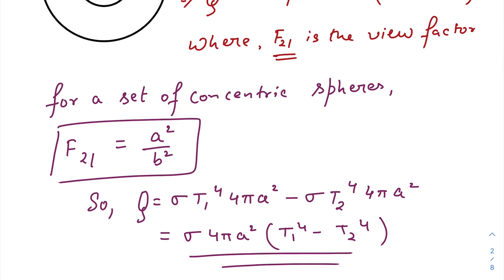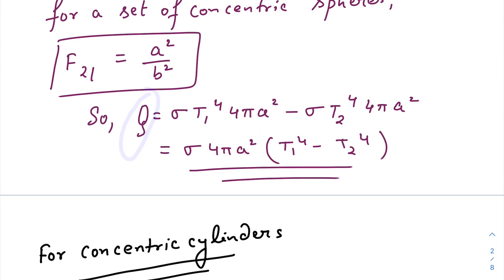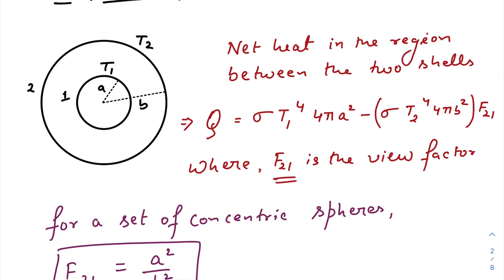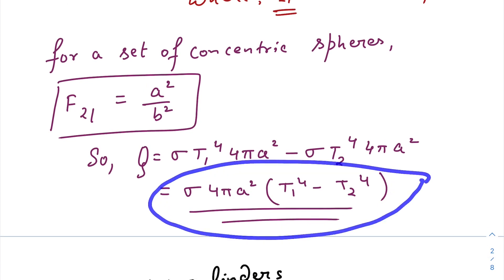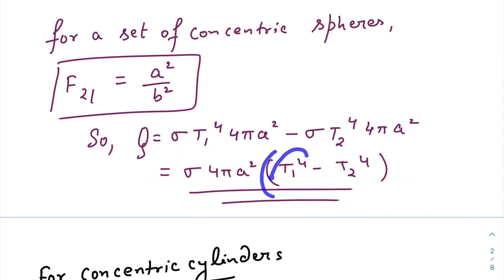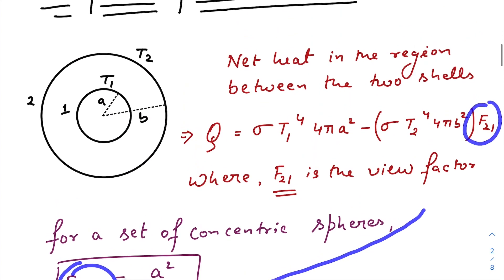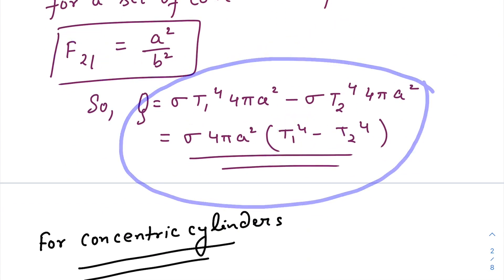For concentric spheres, the view factor F₂₁ is defined as the ratio of the square of the inner radius to the square of the outer radius, i.e., a²/b². There is theory behind this — you can Google 'view factor' to get the relevant information. So the net heat supplied, which is the power emission in the middle region, comes out to be σ · 4πa² · (T₁⁴ − T₂⁴).